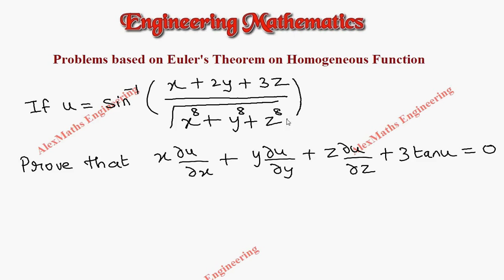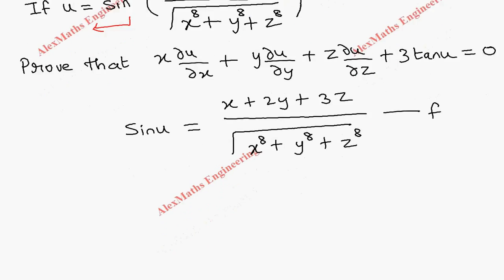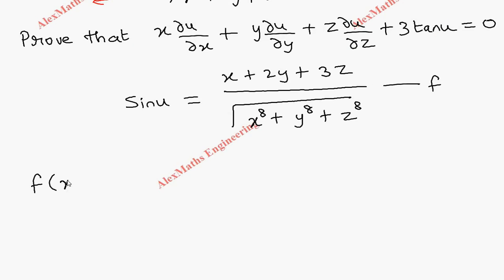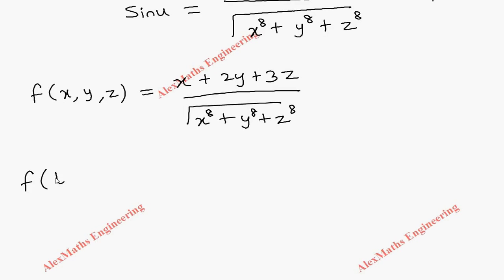We have to prove the given expression. Let's take the sine inverse to the other side, so it will become sine u, and the rest of the remaining terms stay as they are. Now let's take this as the function f, and rewrite it as f of x, y, z, because the function is in terms of x, y, and z. So f(x, y, z) equals sine u, as well as the entire algebraic term.